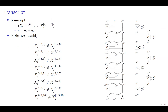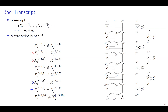A transcript can be summarized as all values x1 through x_end from first to last query. In the real world, certain inequalities hold because the construction is a permutation and collisions are impossible. However, in the ideal world we may have blue collisions if the i-th query is an upper query, or red collisions if it is a lower query. We define a transcript as bad if any of these collisions occur.